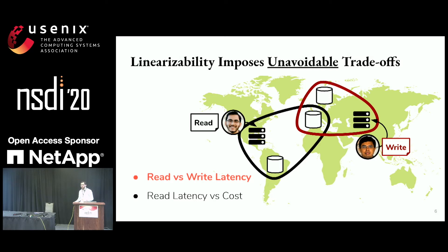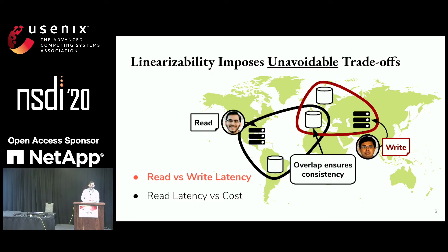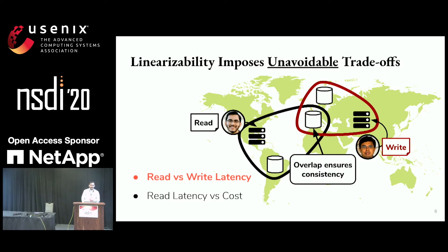Harsha, meanwhile, is going to try writing a new version of the document, and he's going to talk to a write quorum of the data sites. Notice that there's a point of intersection between the quorums — this overlap is what ensures that data will remain consistent. When he successfully writes a new version, I'm guaranteed to see it because I'm reading from one of the sites he just wrote to.